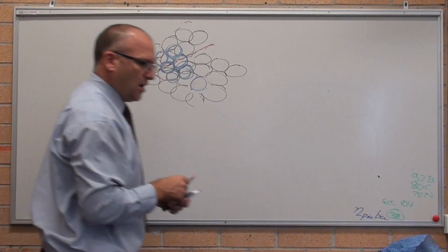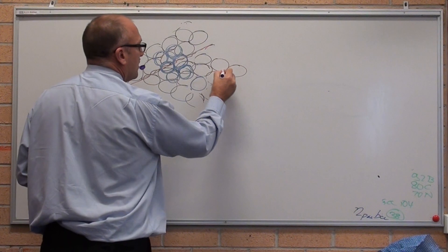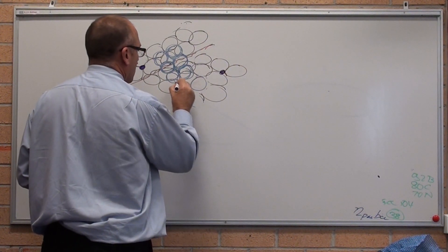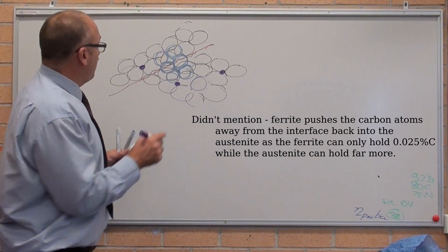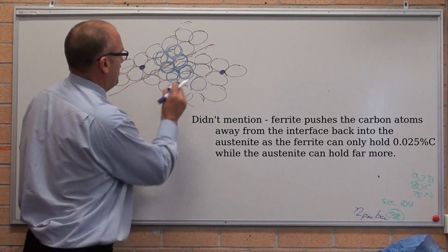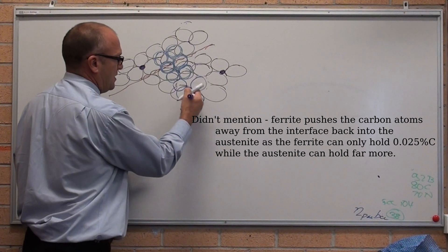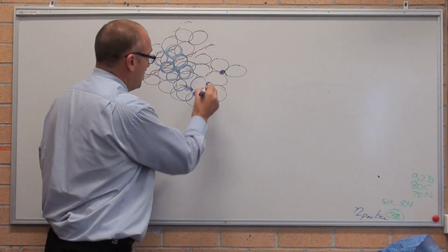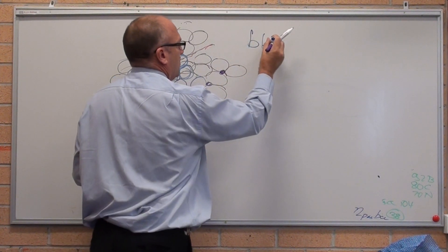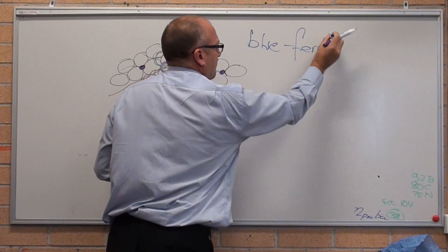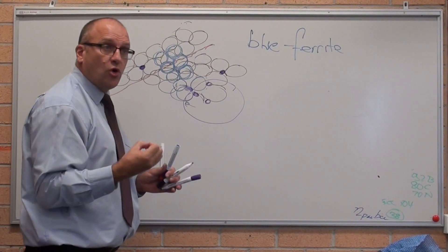What's happening here? This region might have carbon atoms dissolved in it — purple for carbon. There's not that many carbon atoms dissolved. As the ferrite continues to grow, it pushes the carbon atoms ahead of it, and keeps on picking them up. So we get a collection of carbon atoms getting pushed out the front of the ferrite as the ferrite grows.